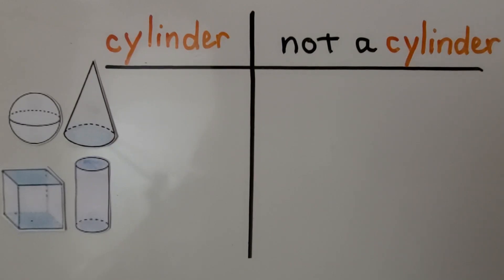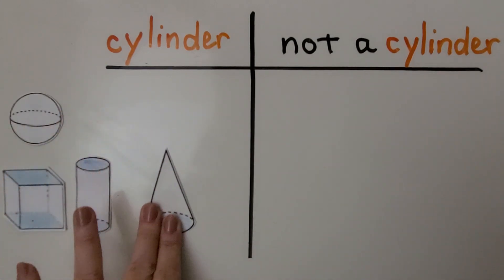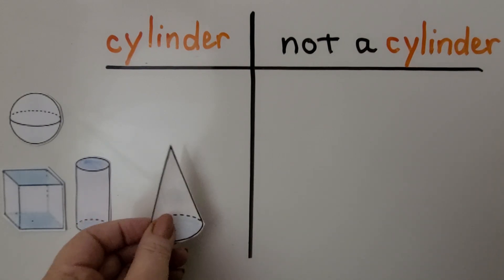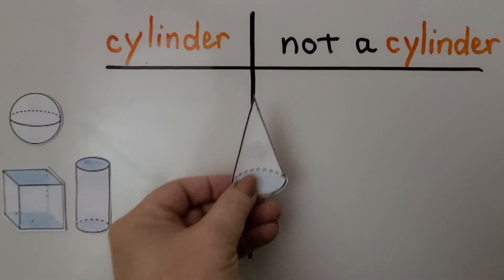We can sort these three-dimensional shapes into sets of cylinder and not a cylinder. Remember, a cylinder has two flat surfaces and a curved surface. Is this a cylinder? I only see one flat surface and it has a point — that's not a cylinder. Do you know what that is? That's a cone.